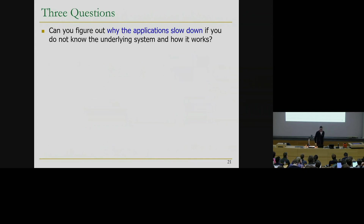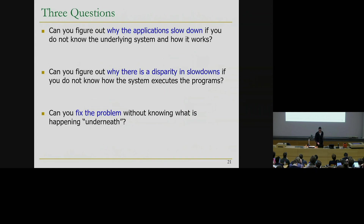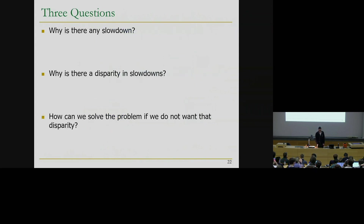The authors named these kinds of applications that cause unfair slowdowns 'memory performance hogs.' Let's look at three questions: Can you figure out why the application slows down if you do not know the underlying system and how it works? Can you figure out why there's a disparity in slowdowns if you do not know how this system executes? And can you fix the problem without knowing what's happening underneath? The answer for all three questions is no, because we have to know something about the underlying system in order to reason about those slowdowns.